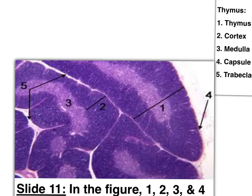The black arrow points to the capsule and the green marks the trabecula. The yellow star indicates the thymus medulla, and the red triangle points to one of the thymus lobules — there are two main lobes subdivided into lobules. Number 1 is the thymus lobule, number 2 is the cortex, number 3 is the medulla, number 4 is the outer capsule, and number 5 is the incomplete trabecula.